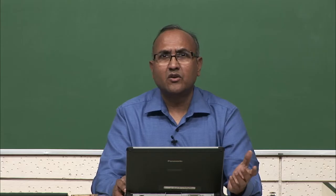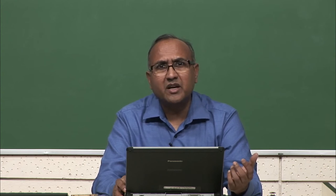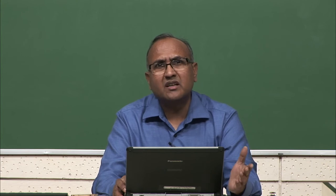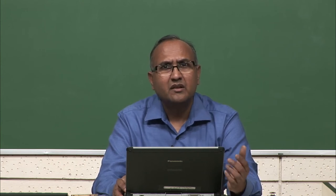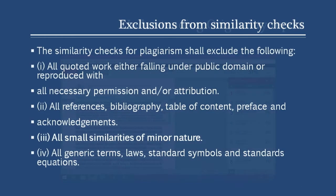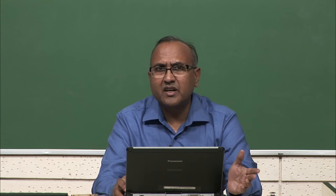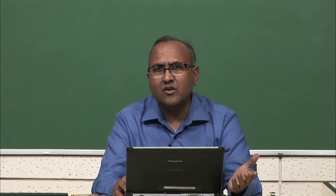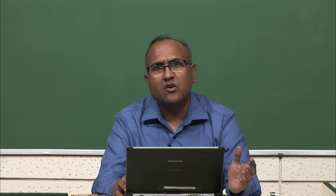Plagiarism detection tools cannot check non-online or print resources. They cannot check tables, graphs, or images. There are problems with mathematical formulas, and most Indian languages are not covered. No software will tell you what is plagiarism — it gives you a similarity report, also called an originality report. How you analyze that report is the most important aspect. You verify original contents, rewrite contents, or provide citations. Certain items are excluded before generating an originality report: bibliography, references, table of contents, preface, and acknowledgements, as well as minor similarities.